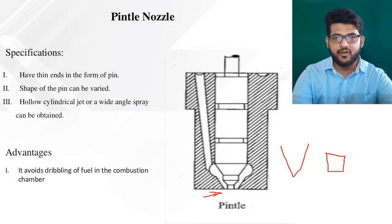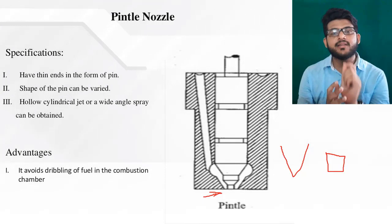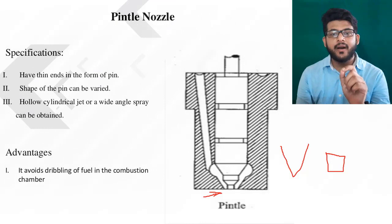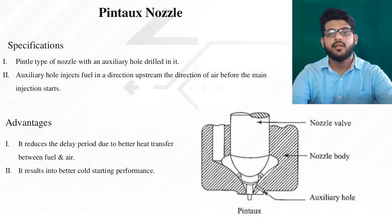Let me explain dribbling again. Whenever you are using a nozzle, when fuel injection ends, some fuel particles remain inside the nozzle and do not go to the combustion chamber — this is called the dribbling effect. We need to import everything inside the combustion chamber; no fuel particles should remain inside the nozzle. The pintle nozzle uses its pin to push all remaining fuel particles into the combustion chamber.